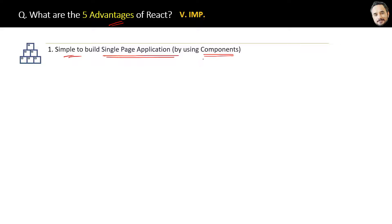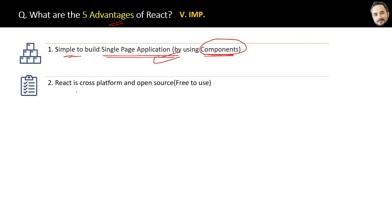The advantages of React come from its features. The second advantage is that React is cross-platform and open source, which means it's free to use. React can be used to build applications for various platforms including web, mobile, and desktop. It also works with other frameworks and libraries.